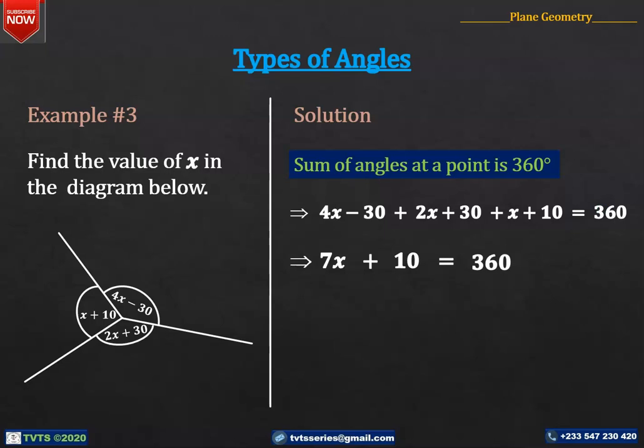Let's group like terms by subtracting 10 from both sides of the equation. This gives 7x on the left-hand side and 360 minus 10 to be 350 on the right-hand side. Dividing both sides by 7, we have x to be 50 degrees.